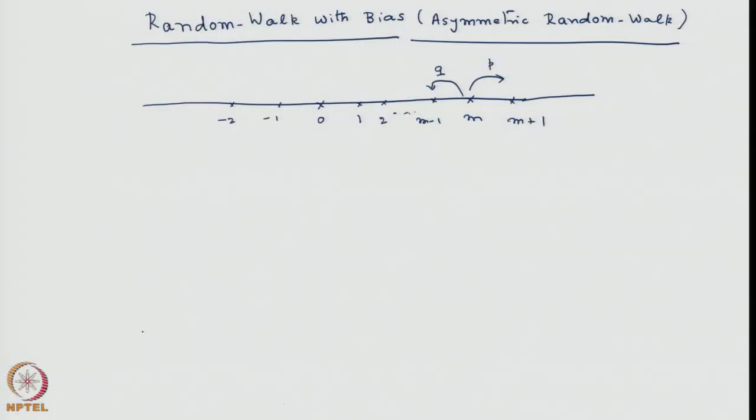In the previous lecture, we discussed the symmetric or unbiased random walk extensively and derived its asymptotic form. We also arrived at an expression in terms of real space and time variables by introducing the concept of diffusion coefficient. Subsequently, we gave a very brief introduction to the problem of what is called as random walk with bias, or asymmetric random walk.